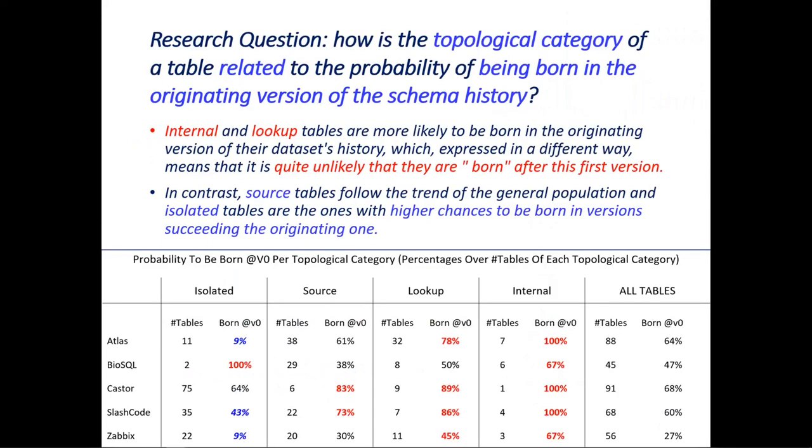We have crunched our numbers around two questions. The first one has to do with when tables are being born, and specifically, whether a table is born in the originating version of the schema history, which we call v zero, or not.